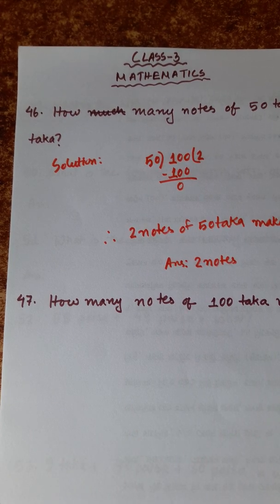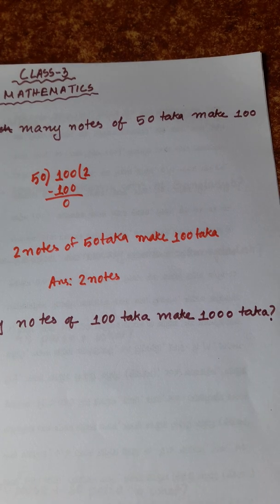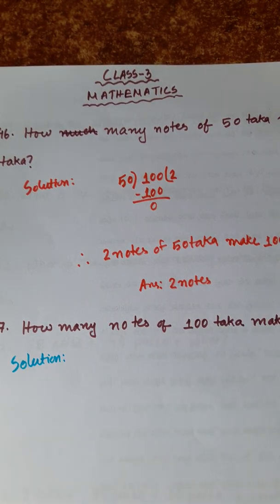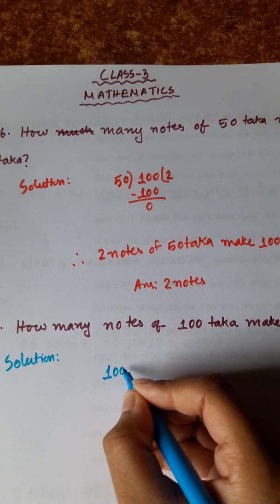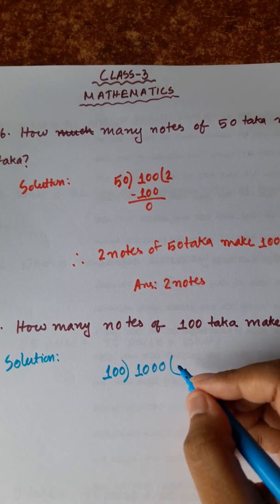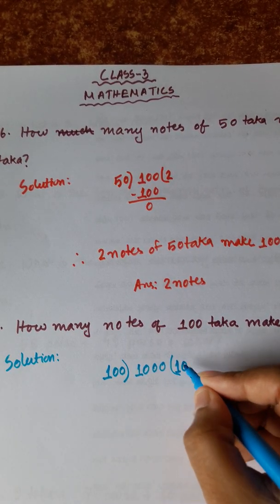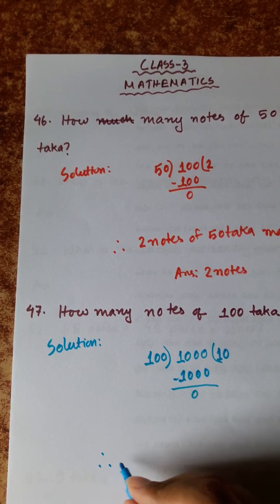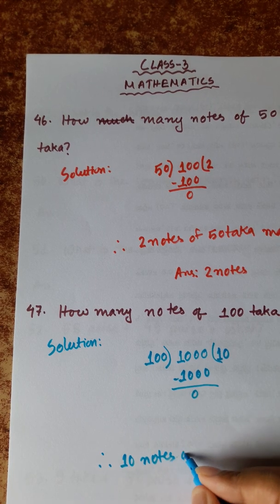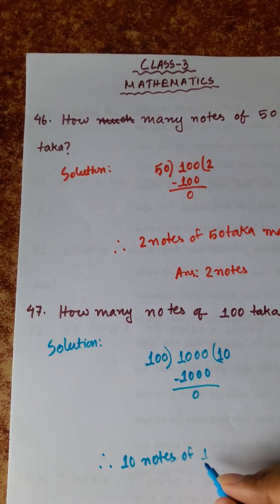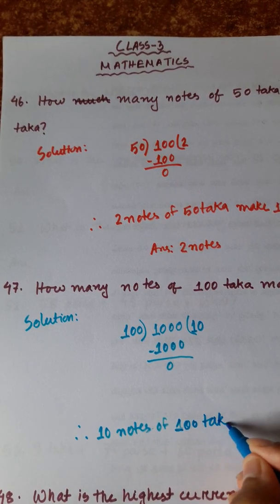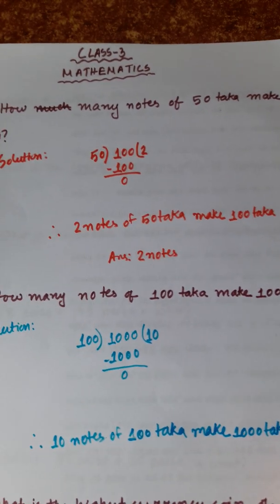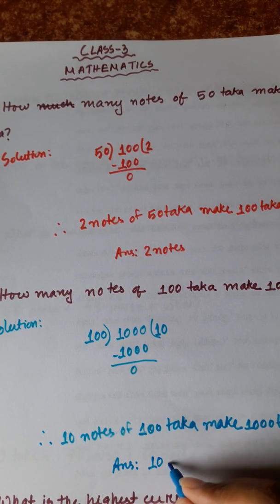Number 47: How many notes of 100 taka make 1000 taka? We divide 1000 by 100. We know that 10 times 100 is 1000, so 10 notes of 100 taka make 1000 taka. Answer: 10 notes.